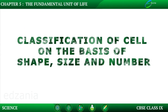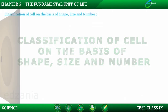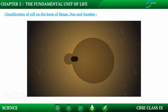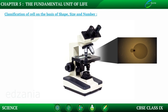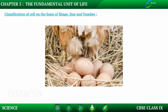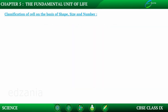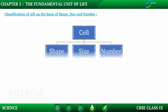Classification of cells on the basis of shape, size, and number. Cells are too small to see with the naked eye and can only be observed under a microscope. However, some cells are surprisingly large, like the egg of a hen, which is also an example of a cell. On the basis of these features, cells are classified into three types: shape, size, and number.